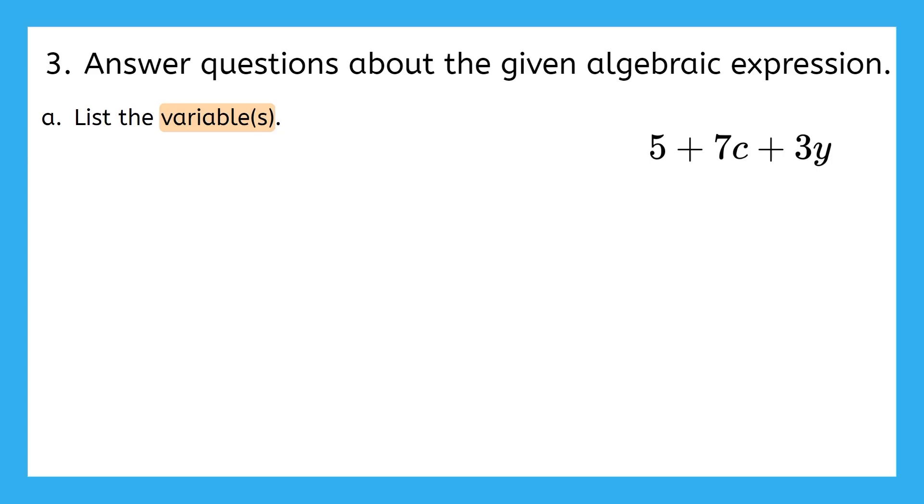In our previous examples, we only had one variable, but there could definitely be more than one. It just means that there are more missing puzzle pieces. Were you able to list all the variables in this expression? This expression has two unknowns, C and Y. Since there are two variables, we'll have two coefficients. What did you define as the coefficient for each variable?